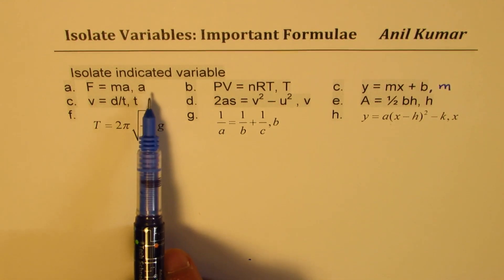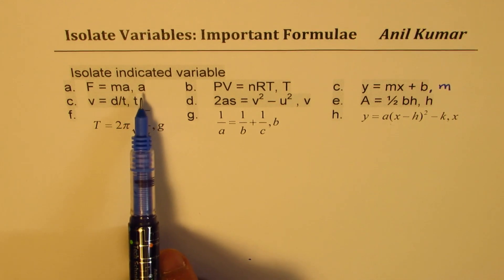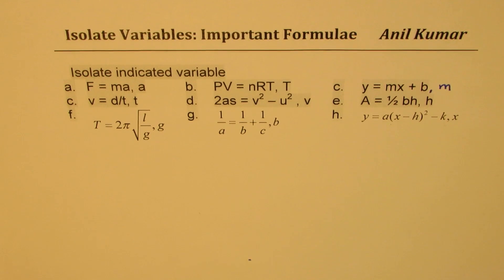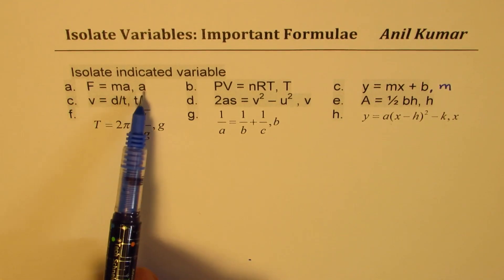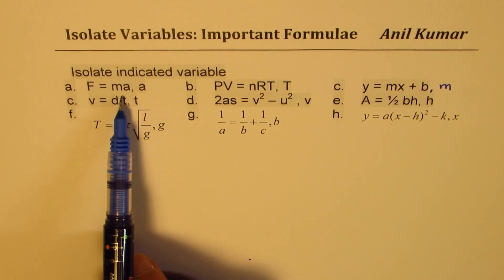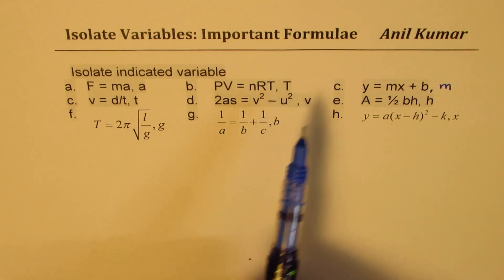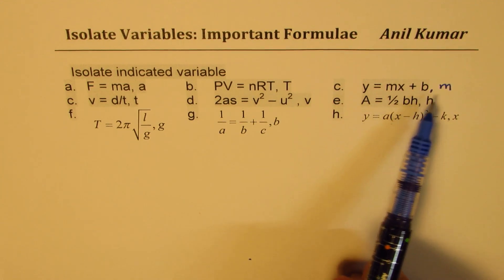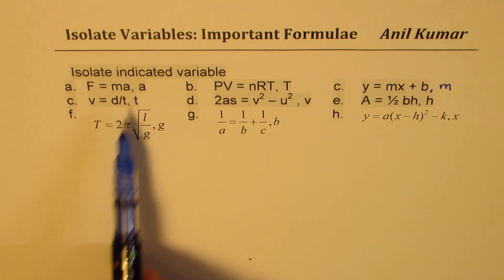In every equation you will see something after comma and that is the variable I need you to isolate. That really means you have to write the formula for a in the first case in terms of f and m. The nine examples we are going to cover are: f equals to m·a, isolate a; pv equals to nRT, isolate T; y equals to mx plus b, isolate m; v equals to d over t, isolate t.